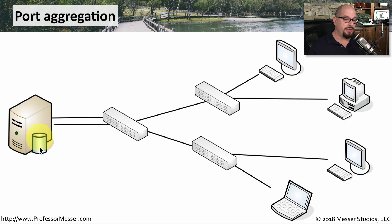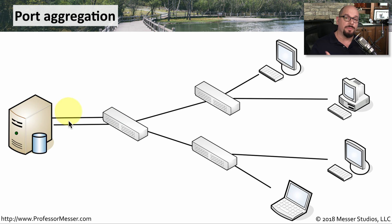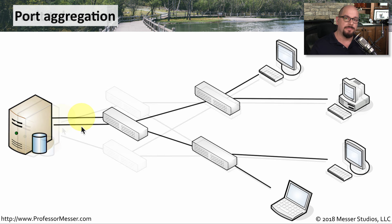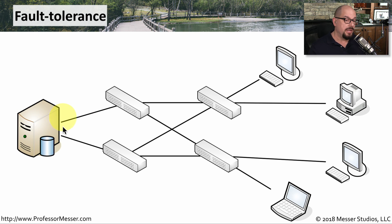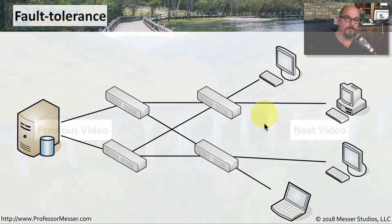Here's a configuration where multiple clients on the network connect to a server through a series of switches. The switch connected to the server has redundant connections through multiple interface cards — this is commonly called port aggregation, because you're using both interfaces as a single aggregated connection. If you want to add fault tolerance, you may want to connect those different connections into different switches, so that if one switch fails, you still have a network path to the rest of the devices on the network.